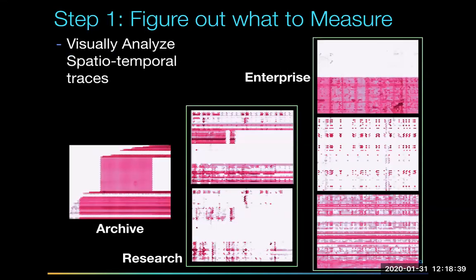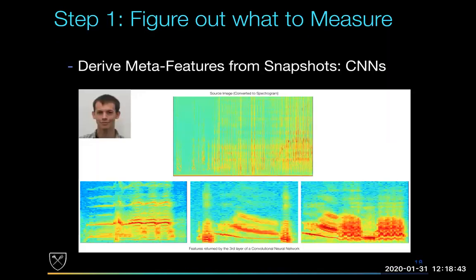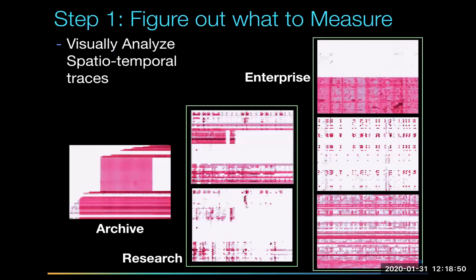In one case we had features extracted from the hidden layers of a CNN; in another we're looking at the entire trace. Each image represents about a week of data, and the colors represent frequency of access. Even just looking at these you can tell there are correlations between things that have behaved similarly on our system.